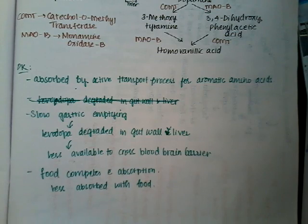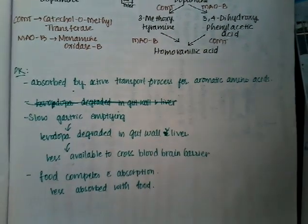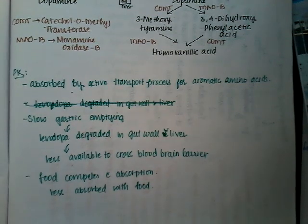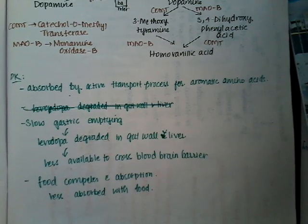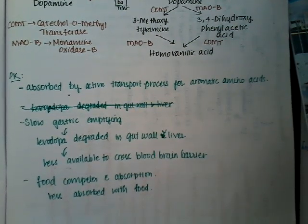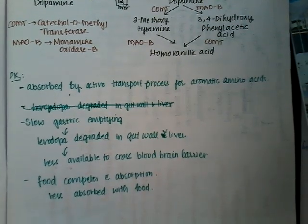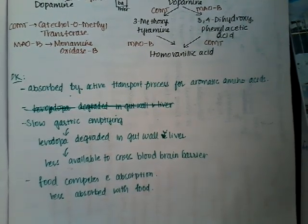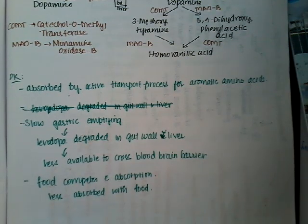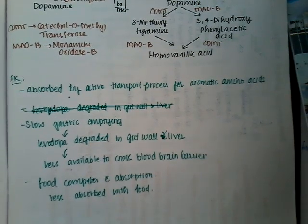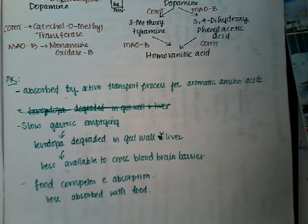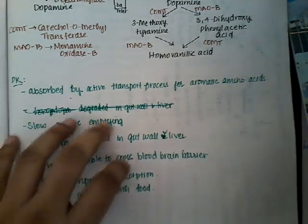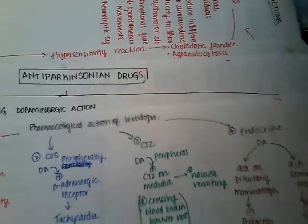Regarding pharmacokinetics: levodopa is absorbed by active transport process for aromatic amino acids. It has slow gastric emptying and is degraded in the gut wall and liver, so only less of it crosses the blood-brain barrier. Food competes with its absorption, so levodopa is less absorbed when taken with food.